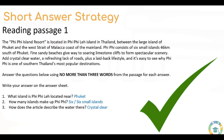Number one: What island is Pee Pee Lay located near? And that is Phuket. How many islands make up Pee Pee? Either six, or six small islands — remembering that I'm staying under the three word limit. How does the article describe the water there? And crystal clear. You can see that my answers are copied exactly with the correct spelling from the passage above.